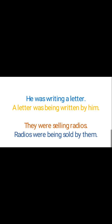Let us look at the example: 'He was writing a letter.' Here 'was' shows the past tense and 'writing' shows the continuous aspect, so this is past continuous tense. To convert it into passive form, 'a letter' is placed as the subject. Since 'letter' is singular, 'was' is written, then 'being' for the continuous tense, and the third form of the verb — 'written by him'.